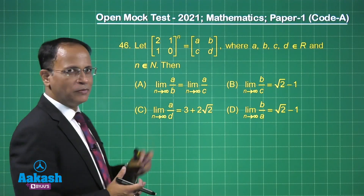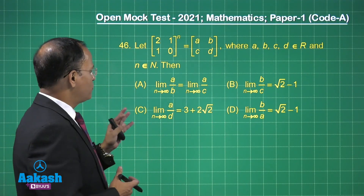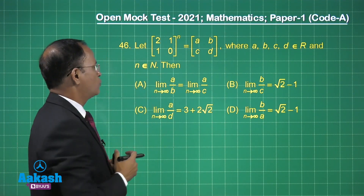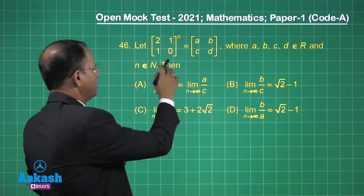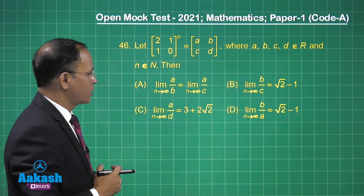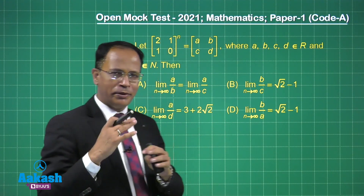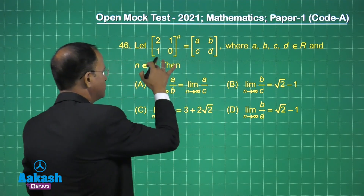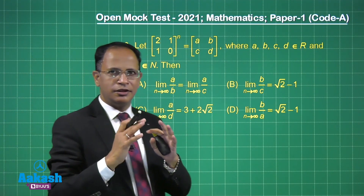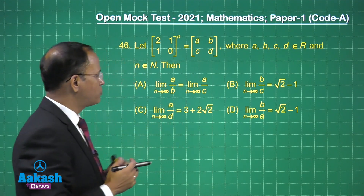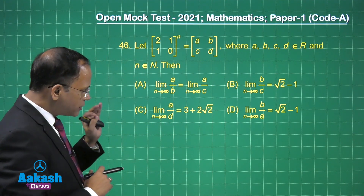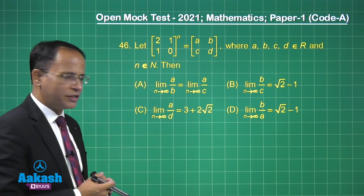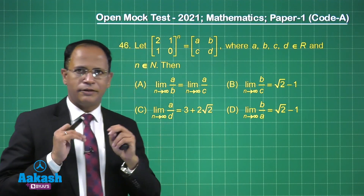Now friends, let us talk about this problem. This is a problem based on matrices and you have been given a matrix say [2, 1; 1, 0] whole raised to the power n, and then we have [a, b; c, d]. This question is purely by comparing — we can find the values of a, b, c and d in terms of n. I will give you a direction: if you know the basics of binomial expansions and basics of matrices, things can be done.